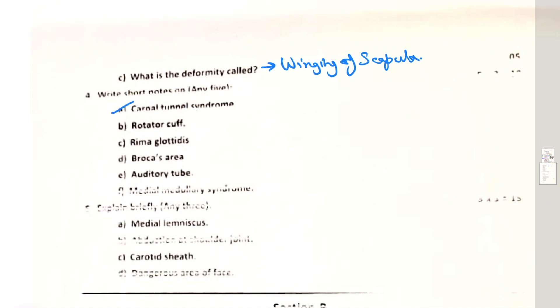Question four: write short notes on any five - carpal tunnel syndrome, rotator cuff, rima glottidis, Broca's area, auditory tube, medial medullary syndrome. This is also called Dejerine syndrome. However, lateral medullary syndrome is also called Wallenberg syndrome. Because it's related to medial portion of the medulla, you know medial functional column is the motor somatic outgoing nerve, so that includes the 12th cranial nerve hypoglossal. In such a condition the tongue will be deviated to the paralyzed side, in fact affected side, because the normal side, the genioglossus pushes the muscle to the paralyzed side.